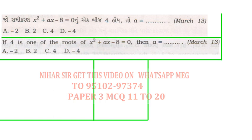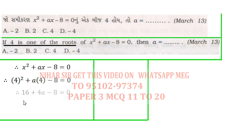This is the second video on paper number 3. If 4 is one of the roots of x² + ax - 8 = 0, then find the value of a. What we need to do is put 4 instead of x wherever it appears in the equation, because we're told that 4 is one of the roots. So 4² is 16.